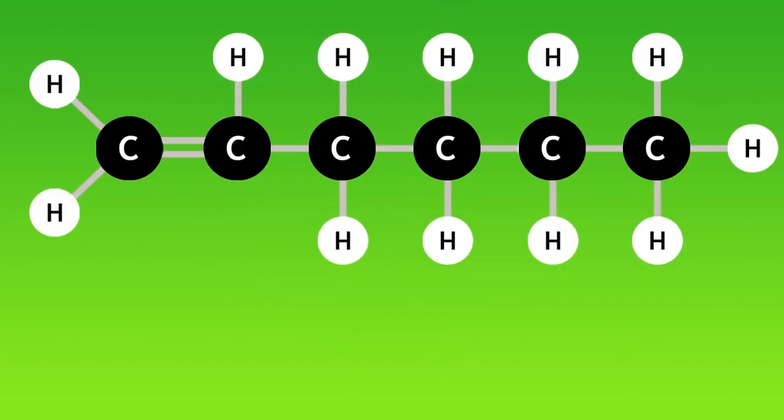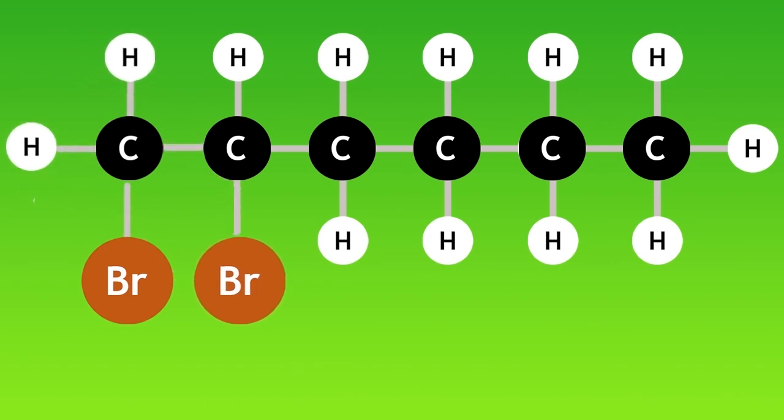So in summary, alkenes are unsaturated. The double bond can break and new atoms can be added to the molecule. Bromine water is a brown or yellowy-orange solution. When you add an alkene to bromine water, the solution goes from brown to colorless. When an alkane is added to bromine water, no reaction occurs and the solution remains brown.